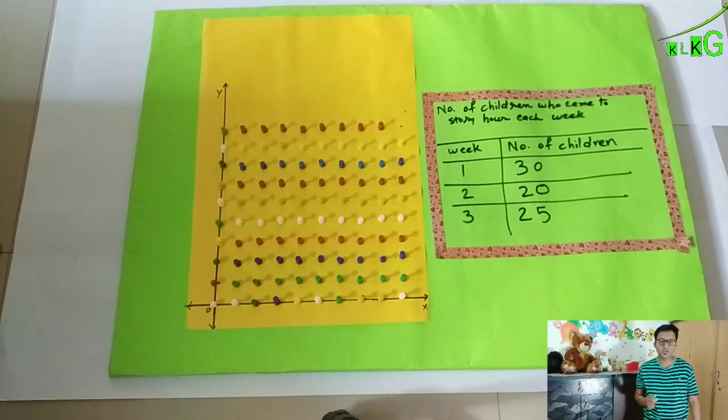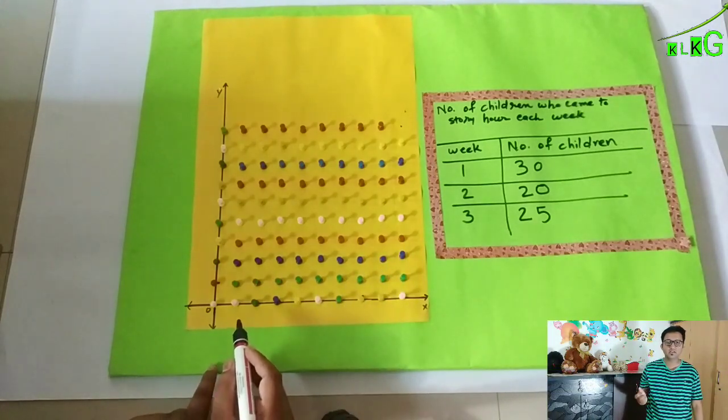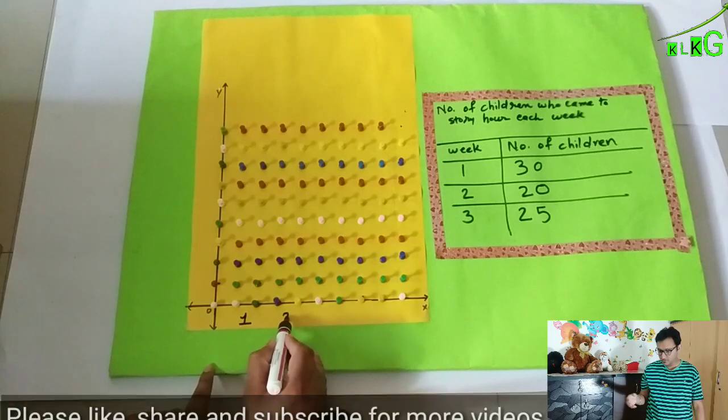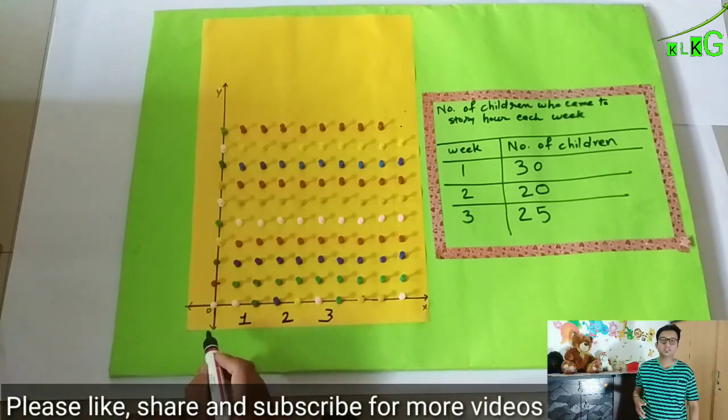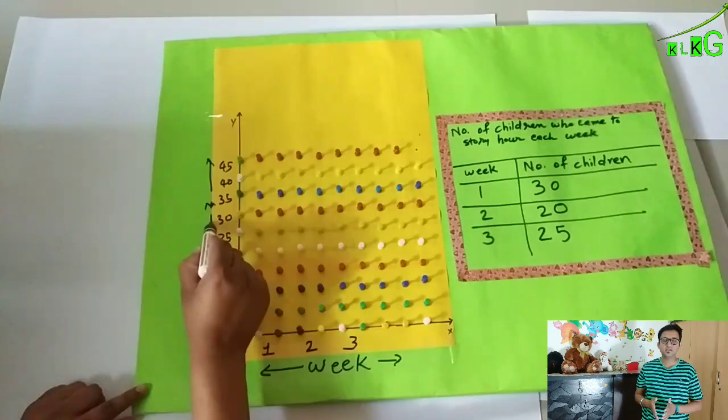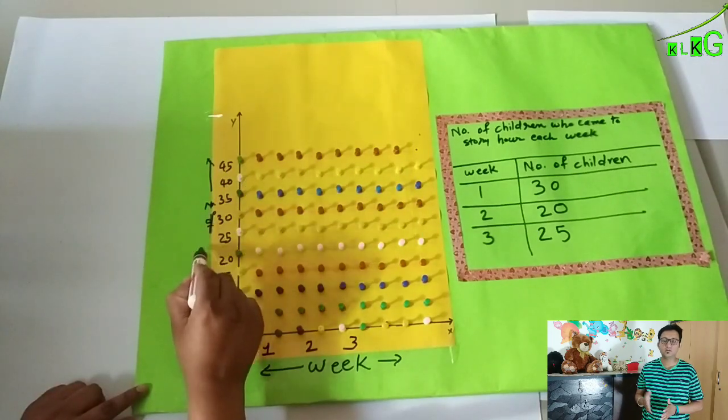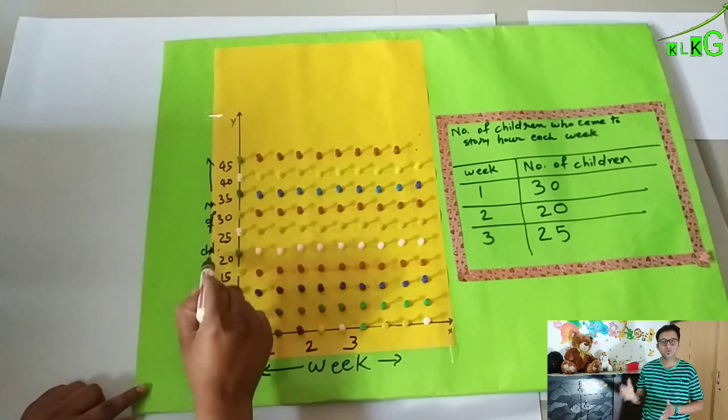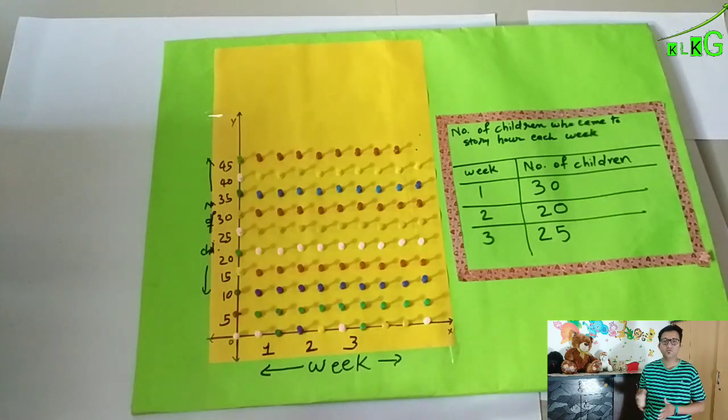Now see here you can find the data or information about students, children who come to story hours. In first week 30, second week 20, and third week 25 students.